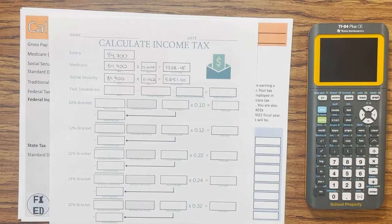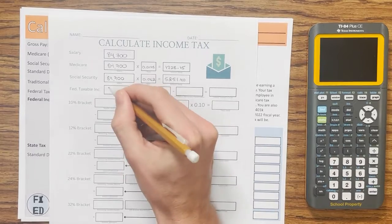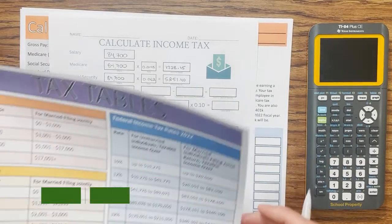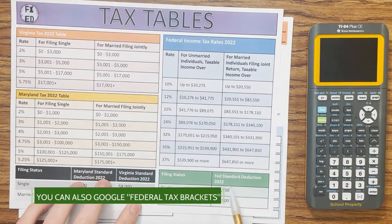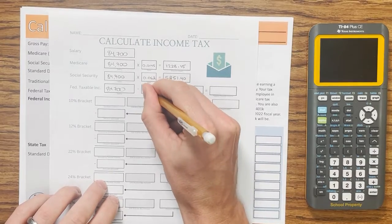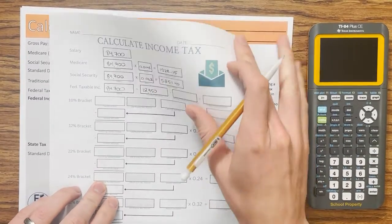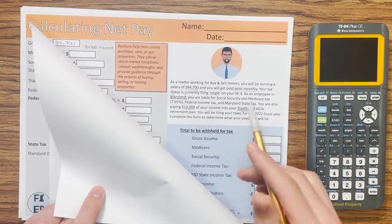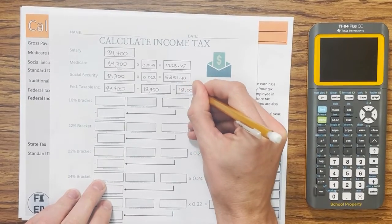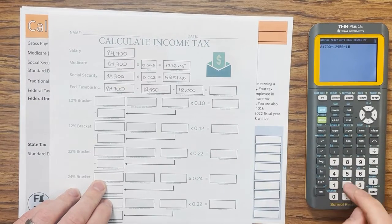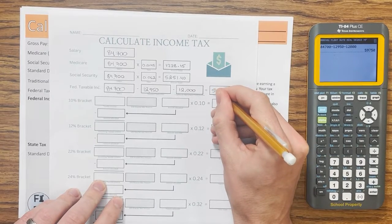Now we have the federal taxable income — this is what you're going to pay federal income tax on. How we calculate that is our salary of $84,700, subtract the standard deduction of $12,950 for someone filing single, and subtract the traditional retirement contribution of $12,000. Since that money goes into a traditional retirement account, we don't pay tax on it. So our taxable income is $59,750.